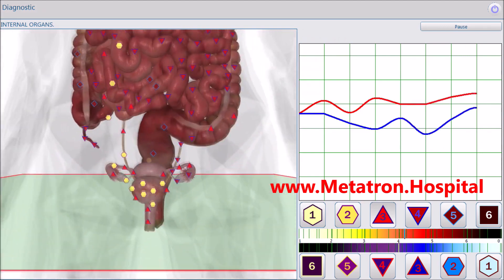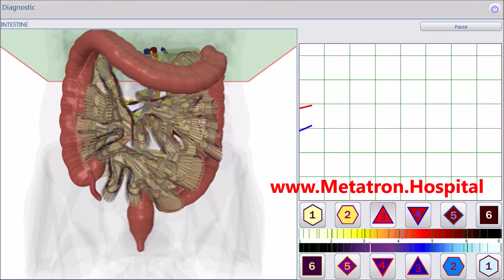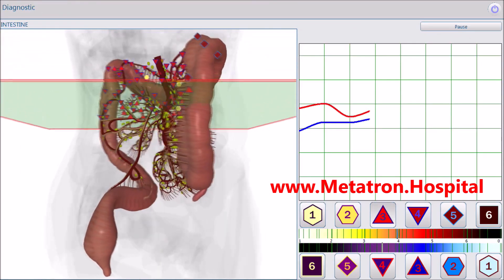The volume of the health report, depending on the chosen variant of its formation, ranges from 10 to 50 pages. The Metatron system applies the following therapies: